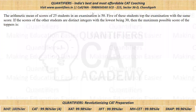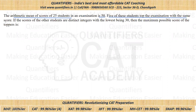Now let us come to the question. I hope all of you have given it a try. So it is given in the question: the arithmetic mean of scores of 25 students is 55. Of these students, they top the examination with the same score. Scores of other students are distinct integers with the lowest being 30. Then find the maximum possible score of the toppers.